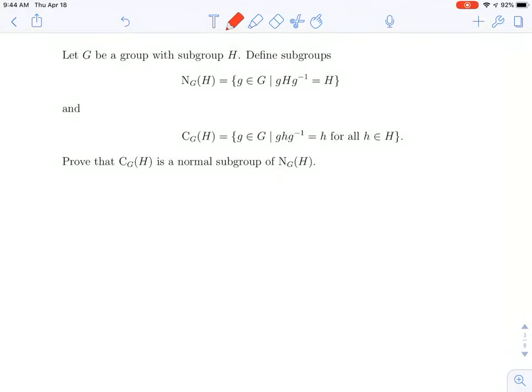Welcome back, everybody. In this video, we're given two subgroups of a group G with a specified subgroup H. So there's G, there's H, and we're given these two subgroups. One is the normalizer of H, and one is the centralizer.